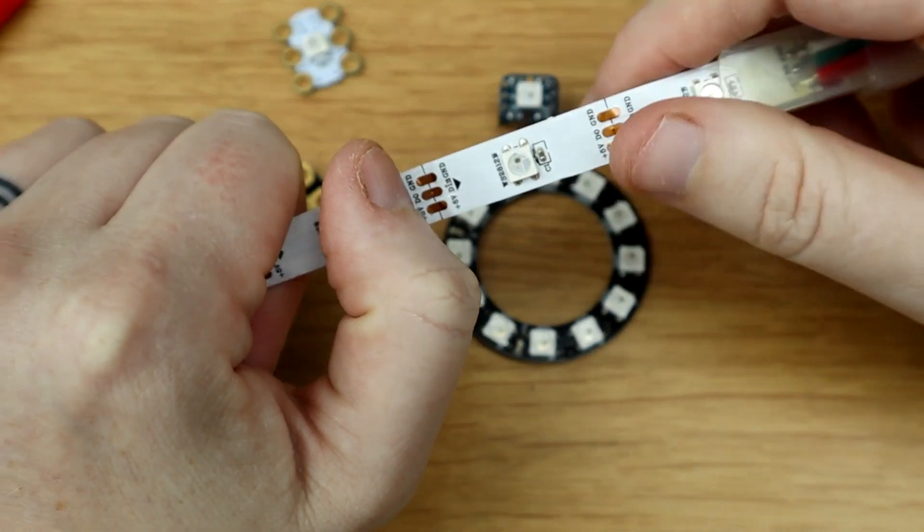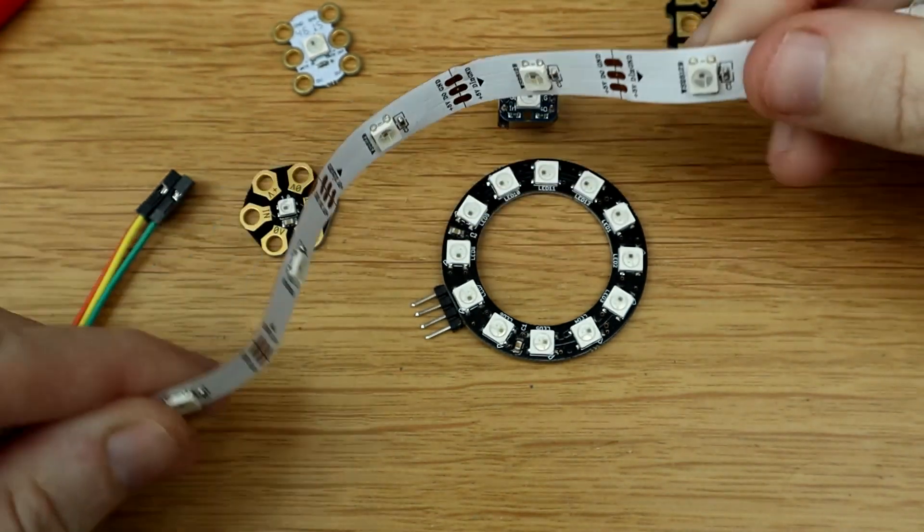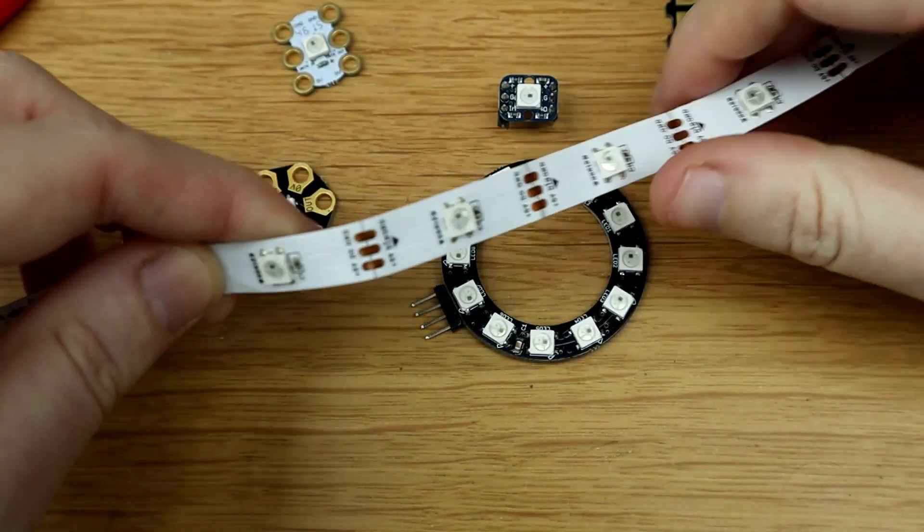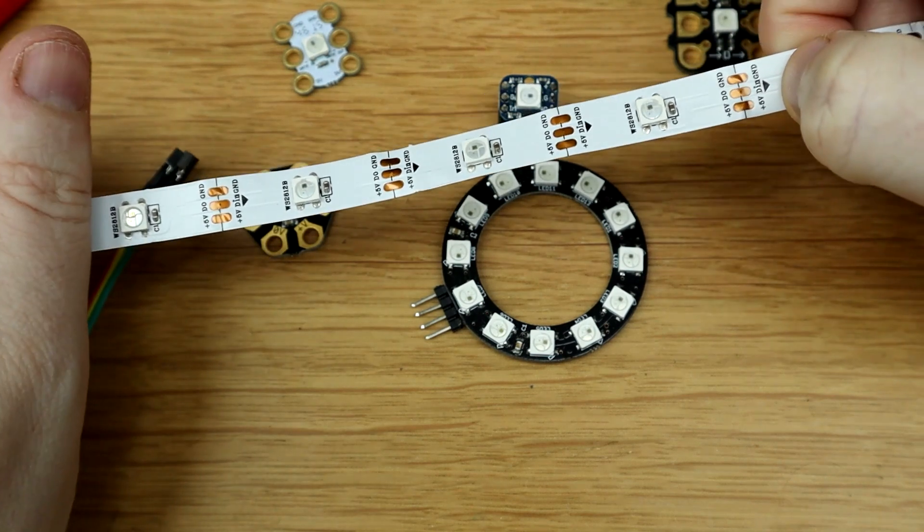Then we have the strip itself. So you can get these quite a lot of places. This one's not got the waterproof backing on it, which I don't know why I took off, but it's just a big strip of NeoPixel. So it's a bit flexible.